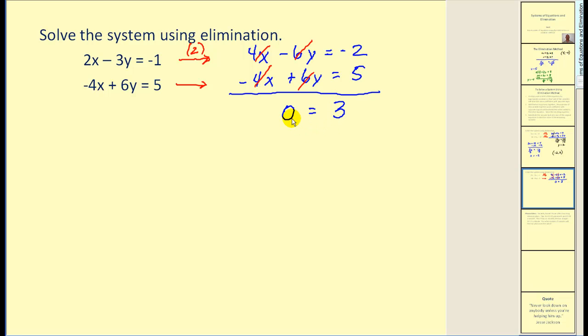If you recall from the previous video, algebraically, if this statement is false, which it is, that's an indication that this system has no solution, which also means this system is inconsistent and independent. You can see elimination is a nice method. It's much faster than trying to graph these linear equations.